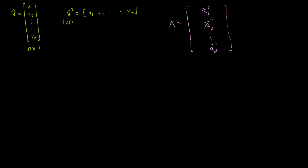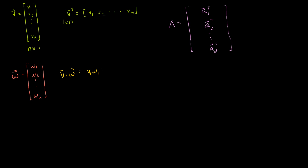Let's think about what happens when you take some operation of this vector with some other vector. Say I have another vector w, also a member of Rⁿ, so w1, w2, all the way down to wn. You could take the dot product of v and w: v·w equals v1·w1 plus v2·w2, all the way to vn·wn. This is the definition of the dot product of two column vectors.